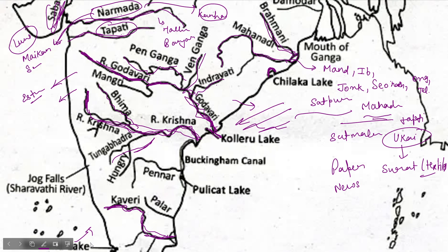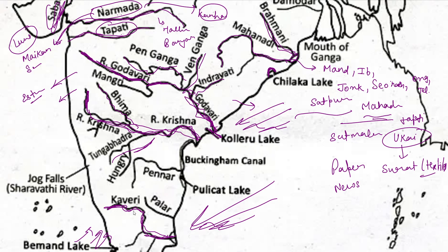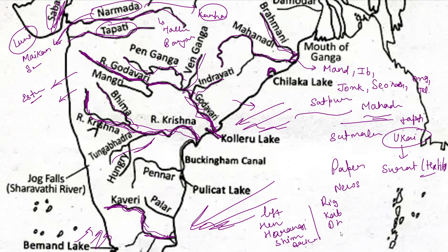The Kaveri river is perennial because it receives water from both the southwest monsoon and the northeast monsoon. It doesn't come from glaciers, yet it flows throughout the year. The left-bank tributaries of Kaveri are Hemvati, Harangi, Shimsha, and Arkavati. The right-bank tributaries are Kabini, Bhavani, Noyil, and Amravati rivers.